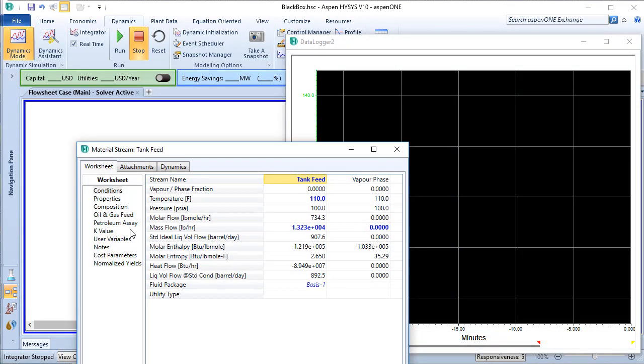Before we look at our results, let's make sure the case comes to steady state. Change the water feed temperature to 100 degrees Fahrenheit, turn off the real-time checkbox, and run the integrator for a few seconds.